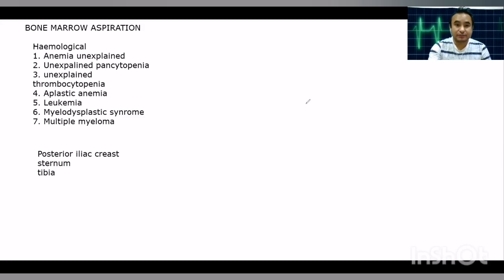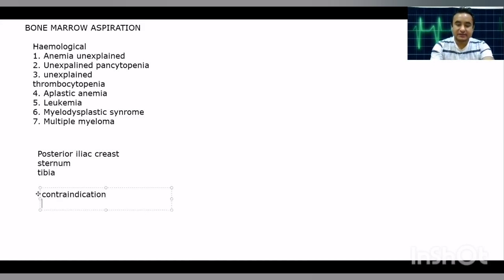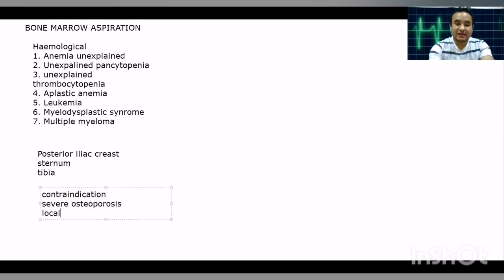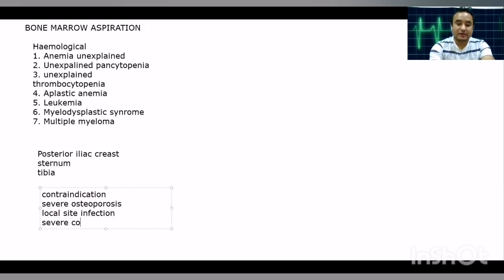The contraindications of bone marrow aspiration include severe osteoporosis — if the patient has severe osteoporosis, performing bone marrow aspiration can cause fractures. Local site infection such as osteomyelitis is also a contraindication. Additionally, coagulopathy is a contraindication, and you cannot perform bone marrow aspiration in such cases.